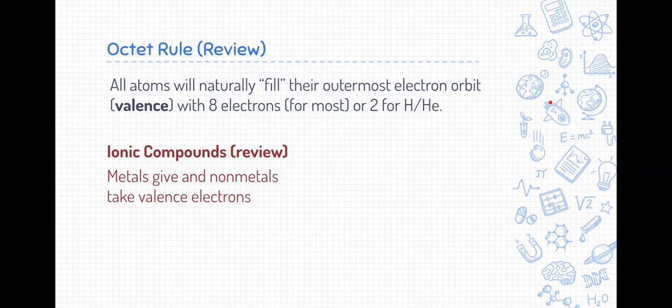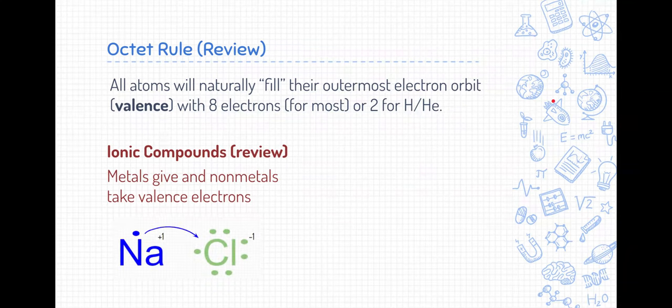Ionic compounds, hopefully you recall, are where metals give their valence electrons, and nonmetals take valence electrons to become full. Here's an example of sodium and chlorine doing this to make sodium chloride. Sodium gives up its valence electron to become positively charged. Chlorine obtains or receives that valence electron to become negatively charged. And then they're attracted to each other based on those opposing charges.